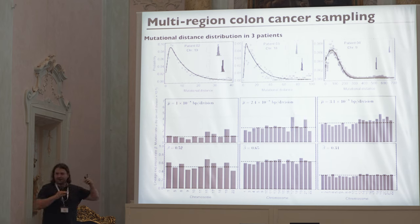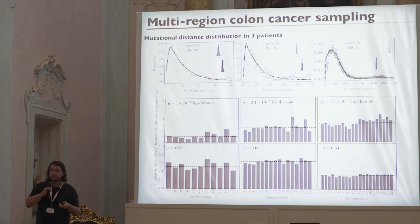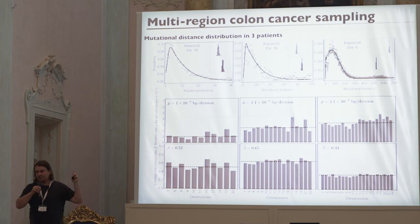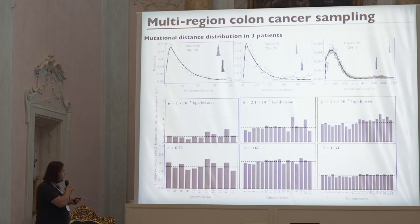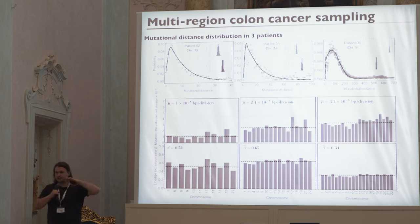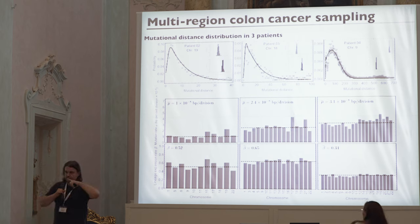We see quite some differences in beta: 0.52 versus 0.34 doesn't seem like much, but it tells you how fast your tumor is growing. Beta equals 1 is a very fast-growing tumor with basically no cell death; low beta is a very slow-growing tumor. There's a factor of 2-3 difference between patients in mutation rates, and the betas stay in the order of 10⁻⁸ to 10⁻⁷ when you divide, which is consistent with what we found before.